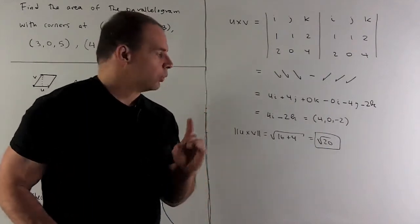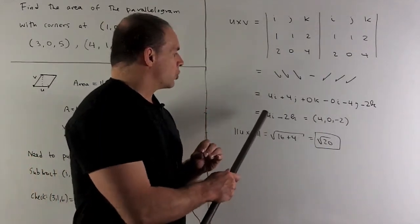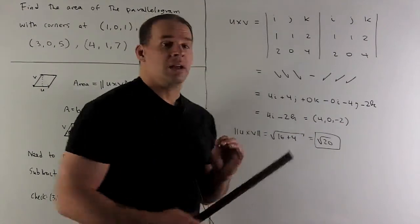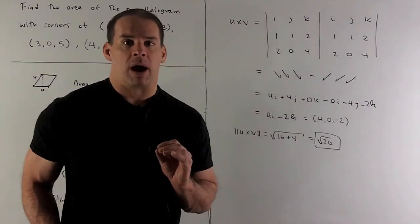We take the length of that. What do we get? We get square root of 16 plus 4. So, I get square root of 20 for the area of my parallelogram.